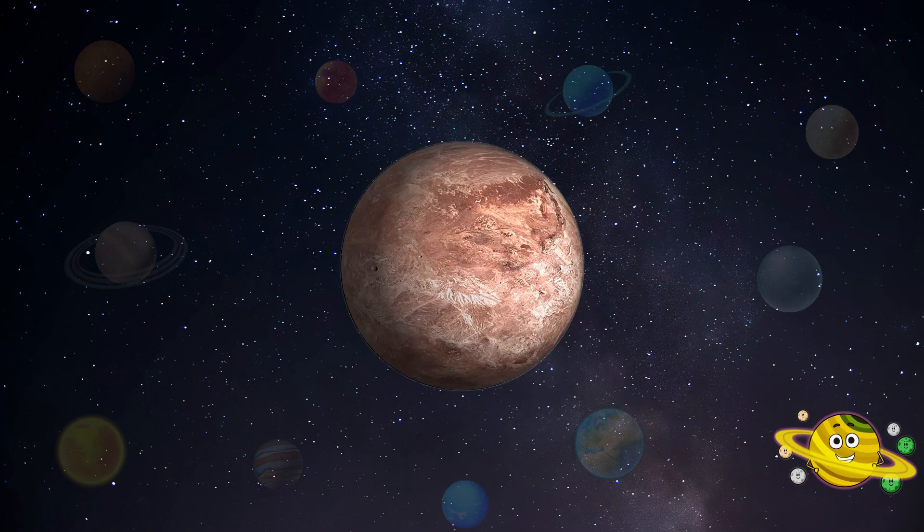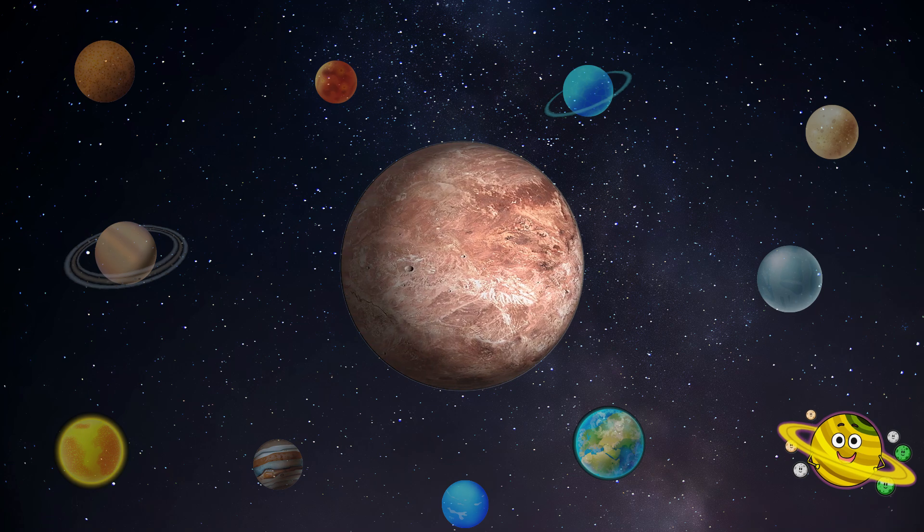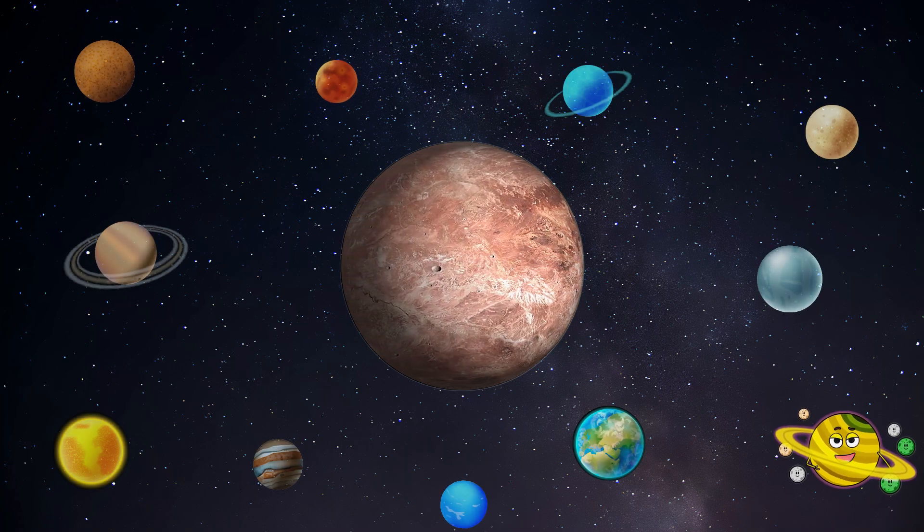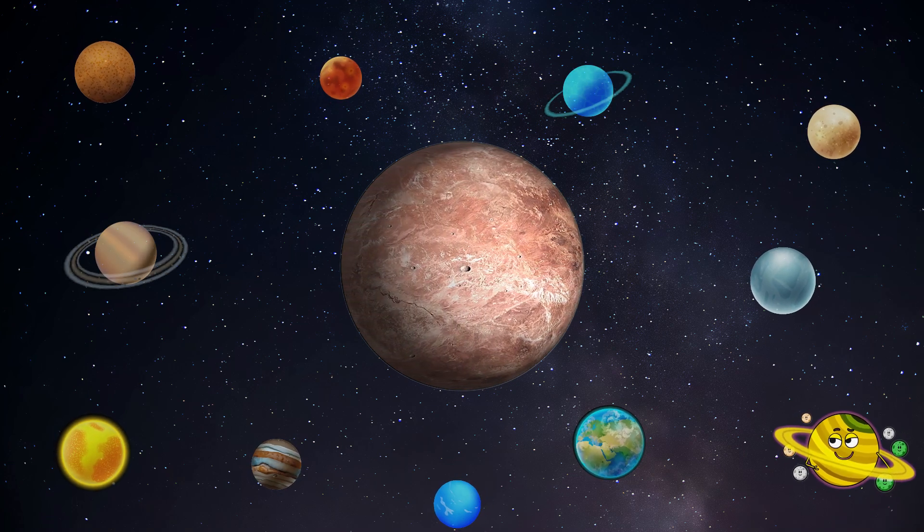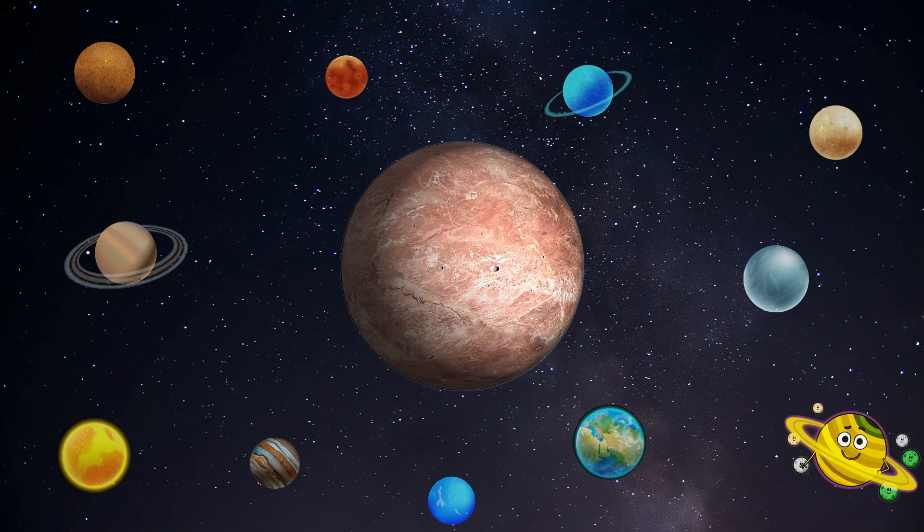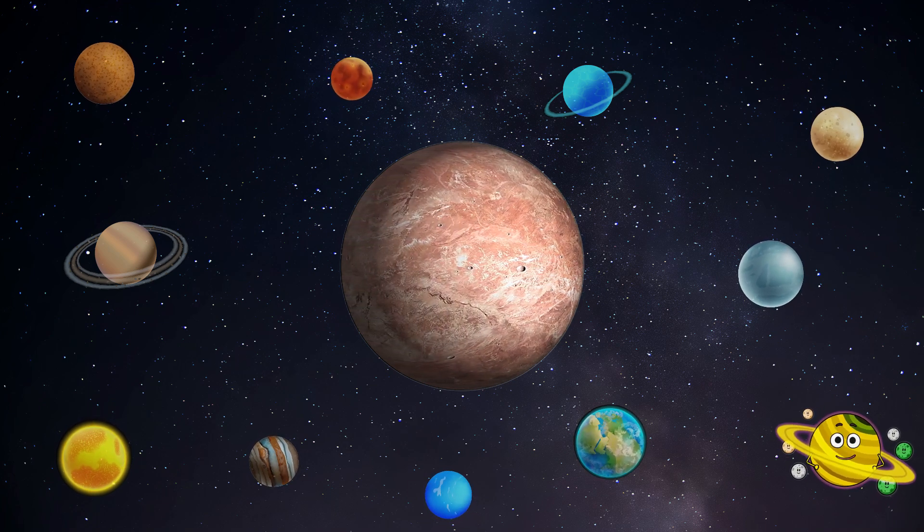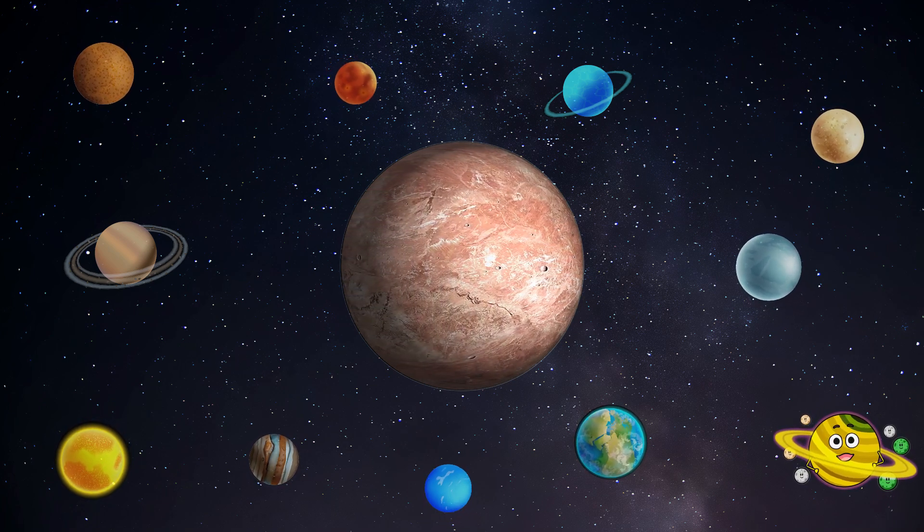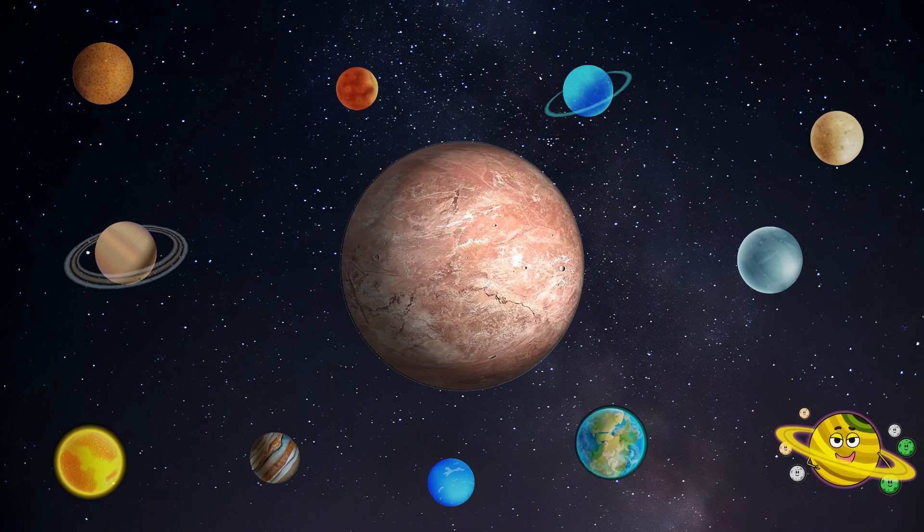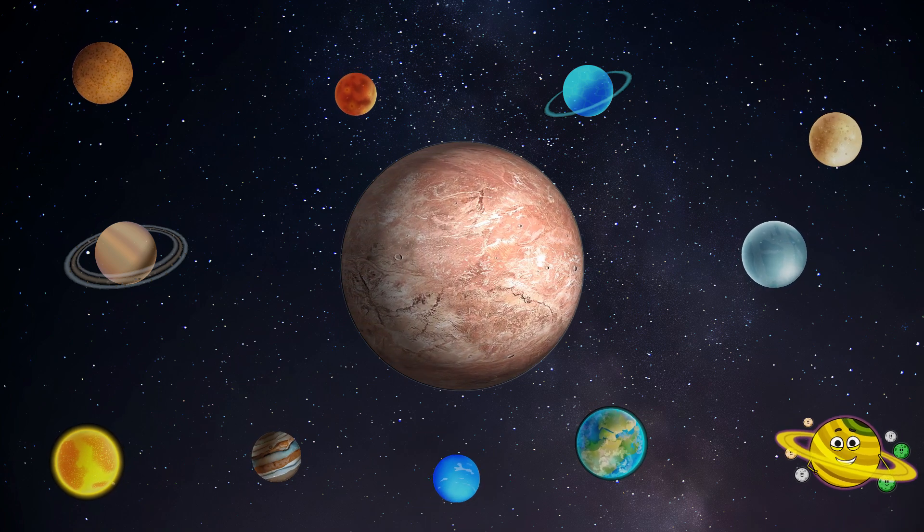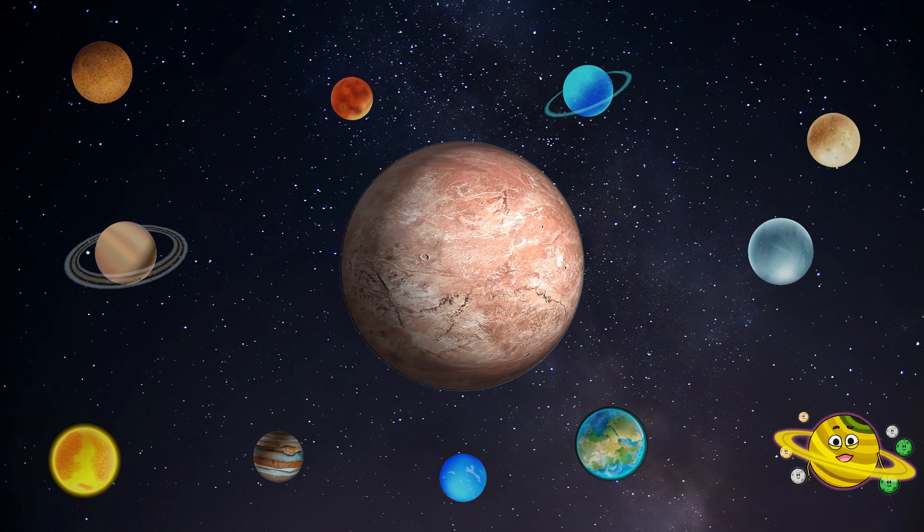There's a little planet named Mercury. Mercury is tiny but mighty, zipping around the sun like a speedy little racer. It's super hot, like standing next to a giant oven, but at night it gets super chilly, like being in a freezer. Mercury is a planet of extreme temperatures, but it has a big heart full of energy and excitement.